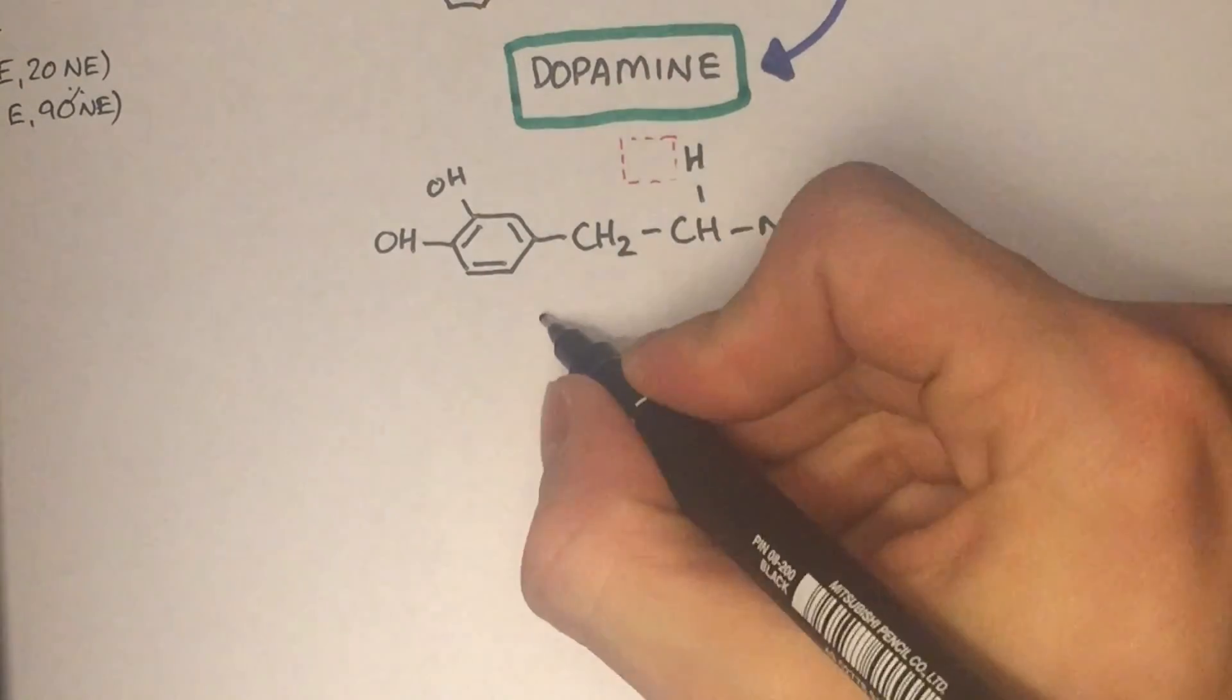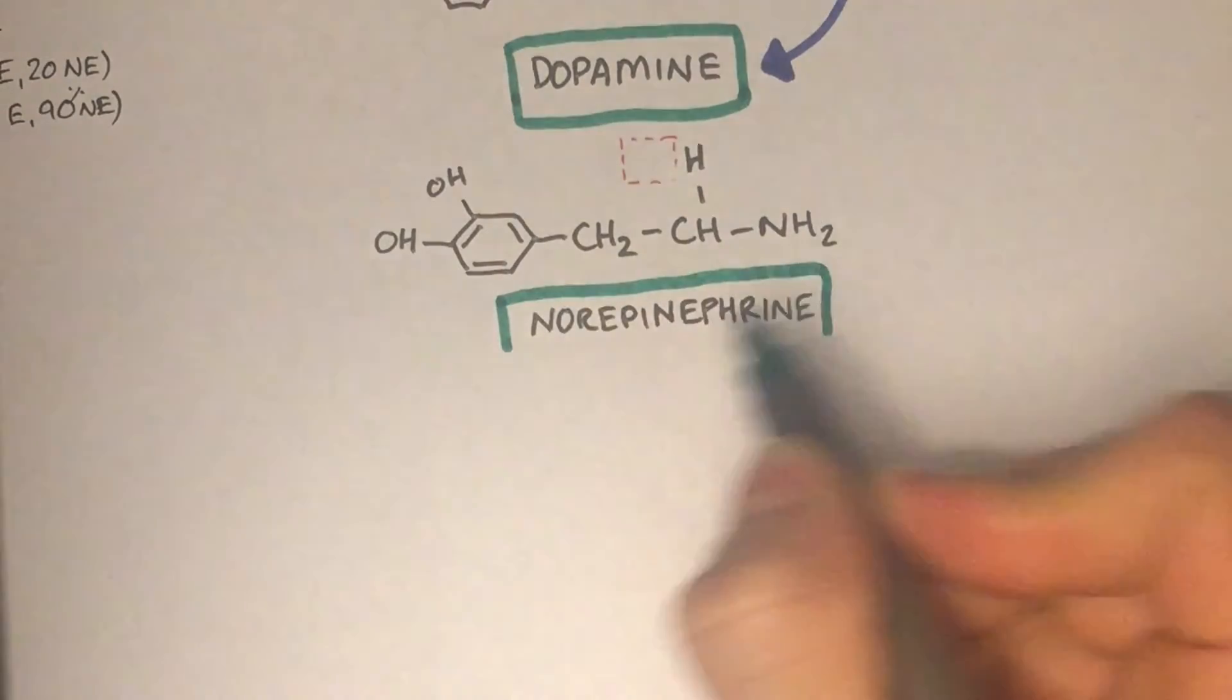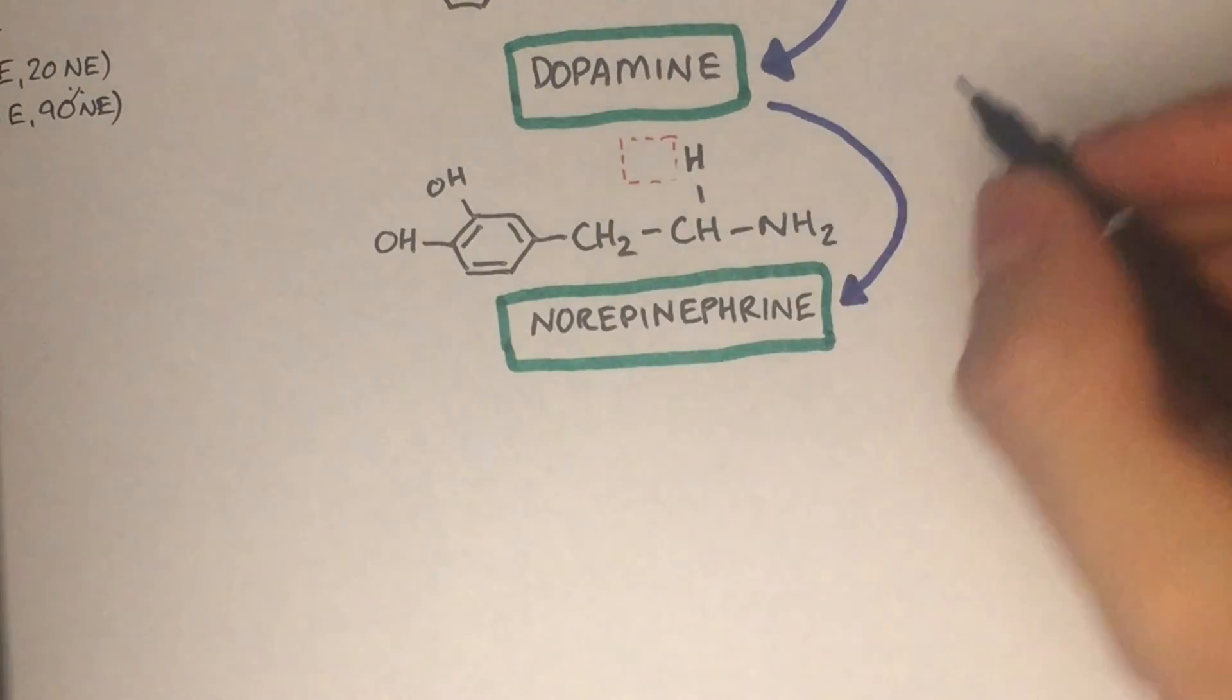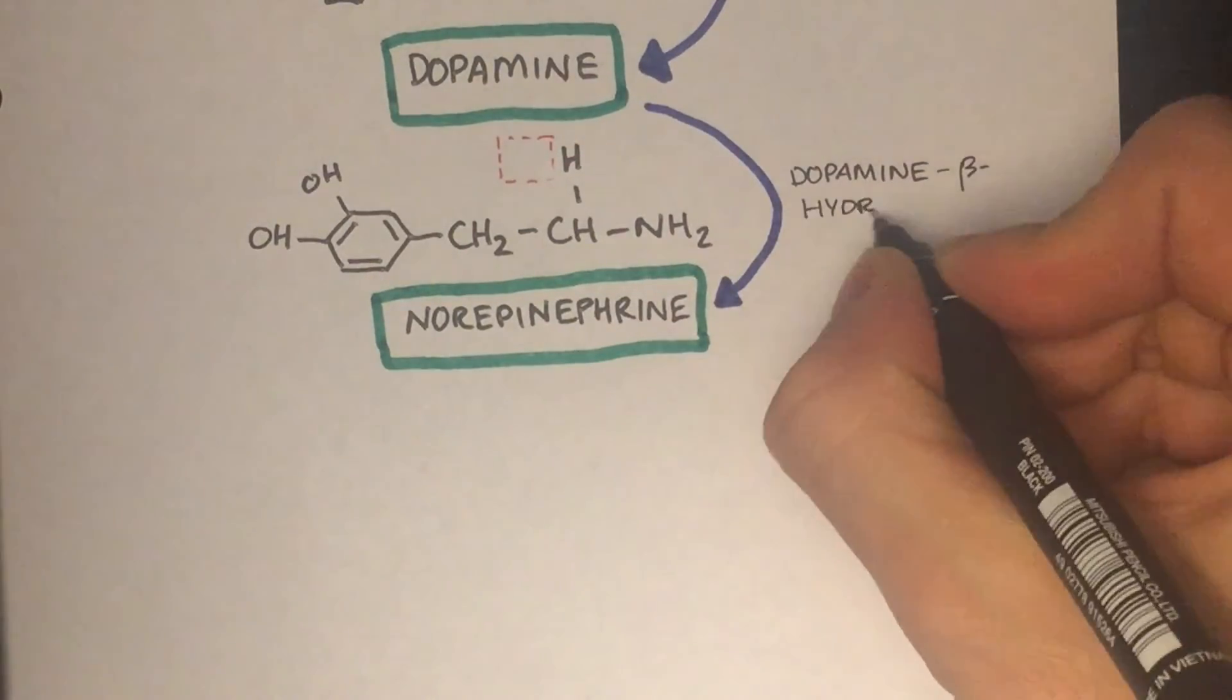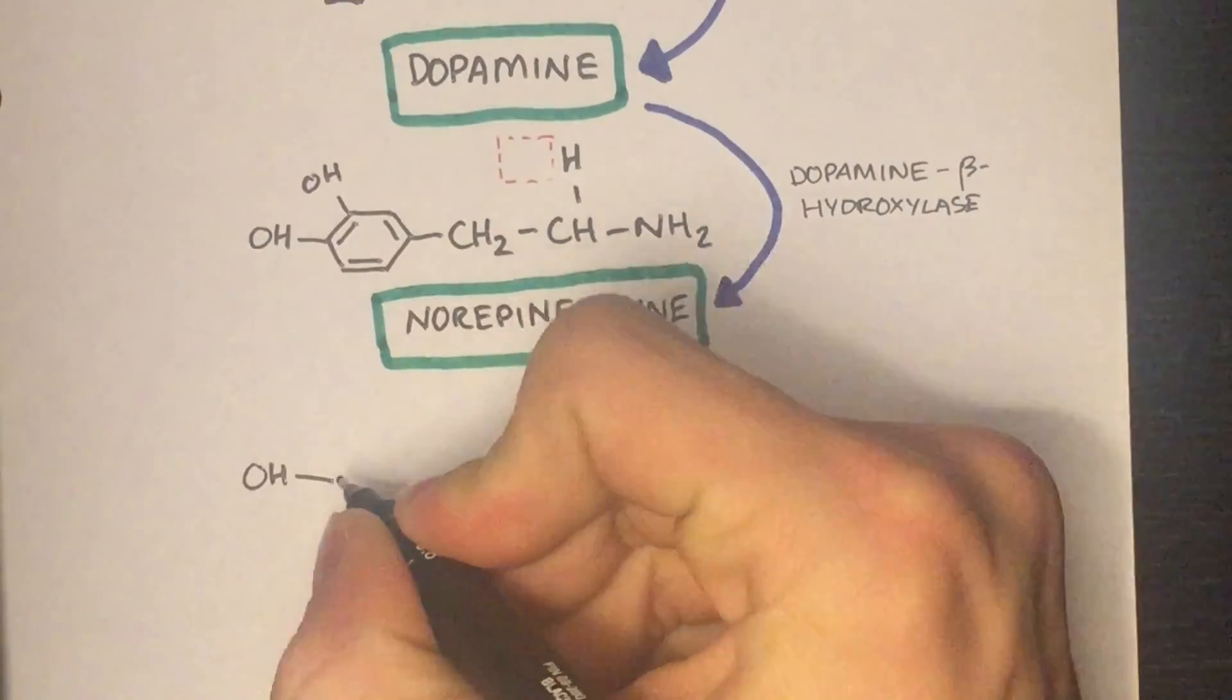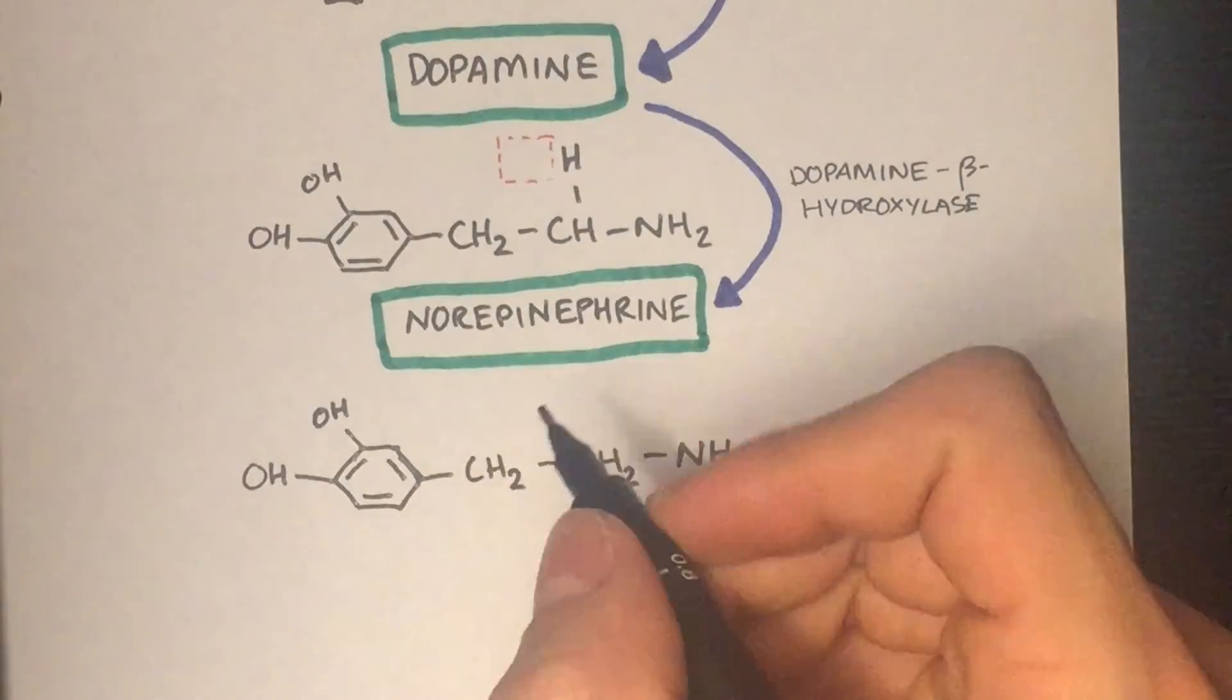Dopamine can then be converted into norepinephrine by the enzyme dopamine beta hydroxylase. That enzyme adds on a hydroxy group to the beta carbon.